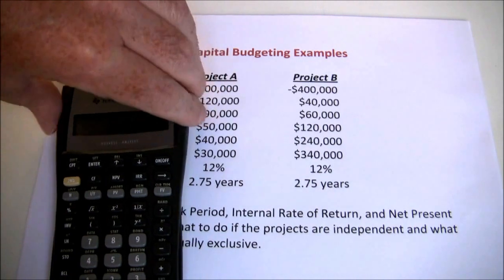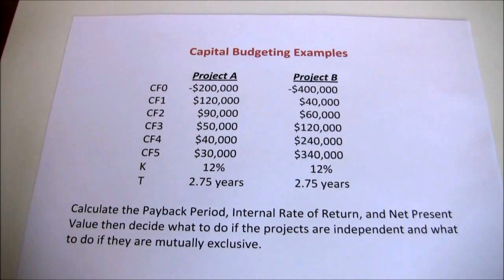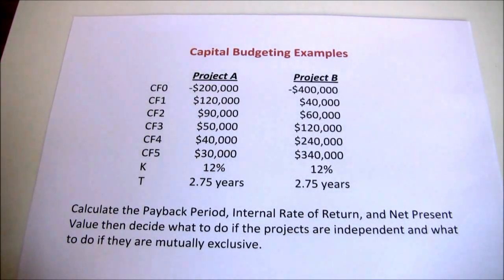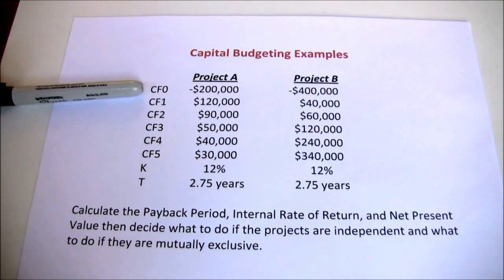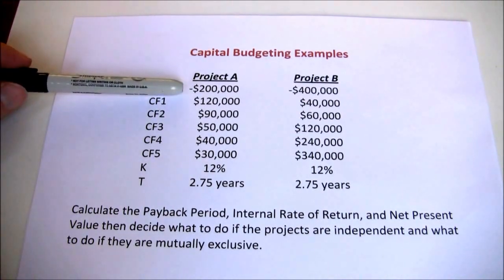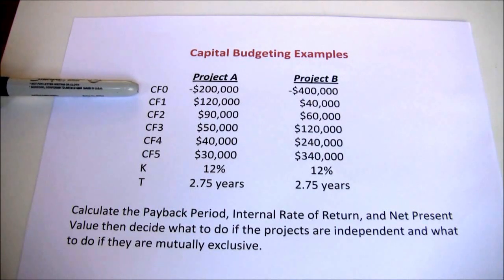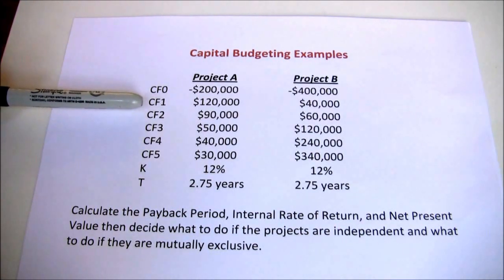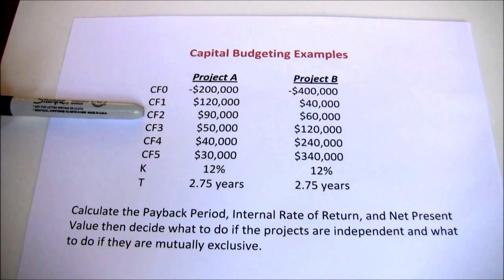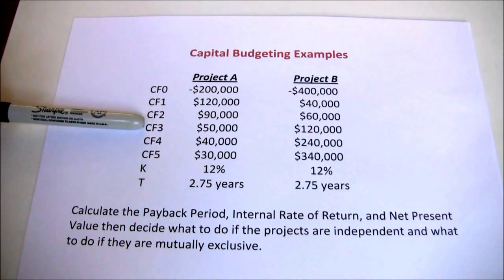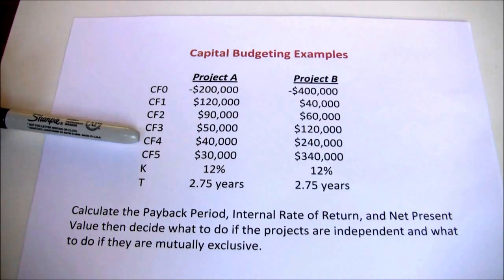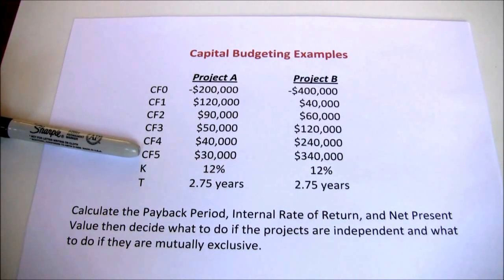The projects we have here are projects A and B. Let's start with project A. We have an initial investment of $200,000 — note that's negative, representing a cash outflow. Cash Flow 1: $120,000. Cash Flow 2: $90,000. Cash Flow 3: $50,000. Cash Flow 4: $40,000. And finally Cash Flow 5: $30,000.